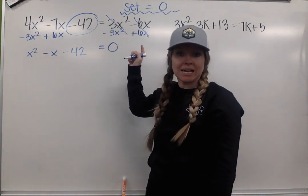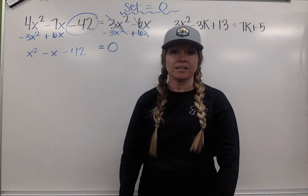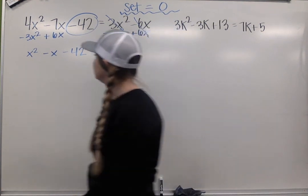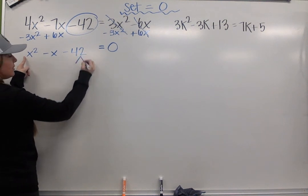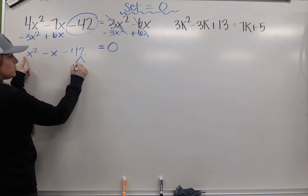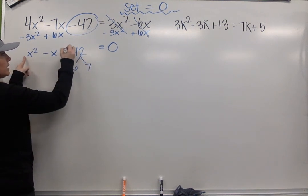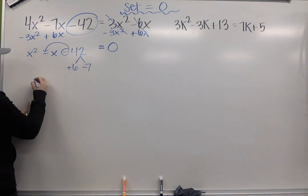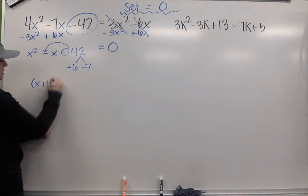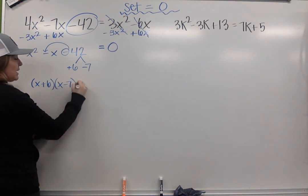Now we have a quadratic set equal to 0. We can go ahead and solve by factoring. Because my leading coefficient is 1, I can use my shortcut. Factors of 42 are 6 and 7. Signs are opposite, larger one is negative. So my factors are (x + 6)(x - 7).